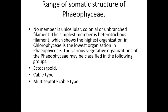The third type is the multi-septate cable type, represented by Chorda filum. In this species, the thallus is formed by many compact filaments. There is no true parenchyma — true parenchymatous cells are absent — but pseudoparenchymatous cells are present.